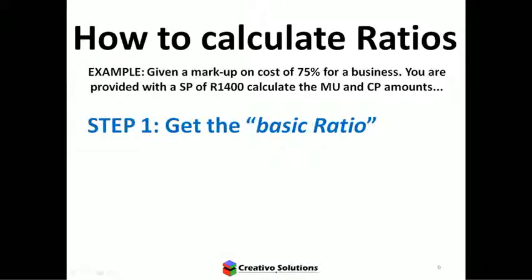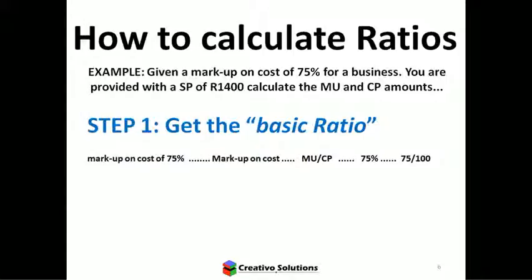Let's try another example. Given a markup on cost of 75% for a business, you are provided with a selling price of 1,400. Calculate the markup and cost price amounts. Step one: get the basic ratio. Markup on cost of 75% means markup divided by cost equals 75 over 100. So cost is 100, markup is 75, and selling price is 175. That's the basic ratio.